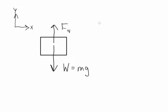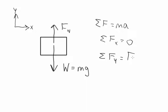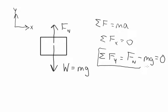We know these are the only two forces acting on the object, and it's sitting still. The sum of all forces equals mass times acceleration. The sum of forces in the x direction equals zero. The sum of forces in the y direction is the normal force (positive y) minus mass times gravity (negative y), and that equals zero. Since the object is not moving, there's no acceleration. So the normal force minus mg equals zero, and from this free body diagram we can immediately see that the normal force equals mass times gravity.